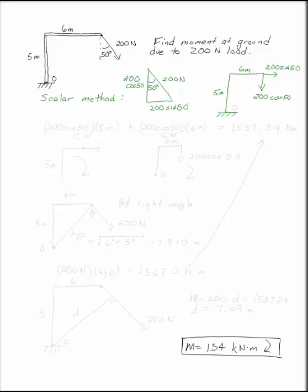So if you redraw your picture to look like this, the 200 sine 50 clearly has a perpendicular distance of 5 meters, and the 200 cosine 50 has a perpendicular distance of 6 meters.